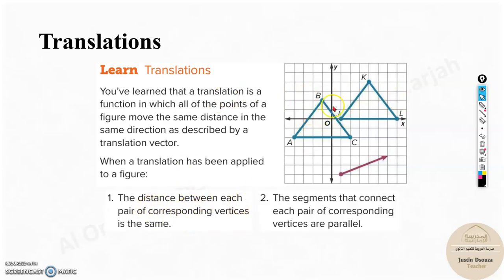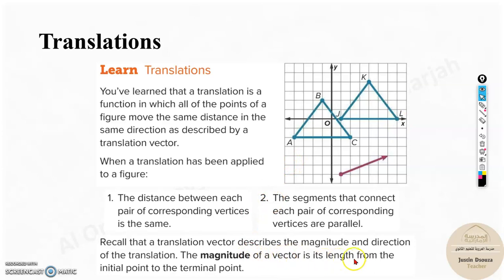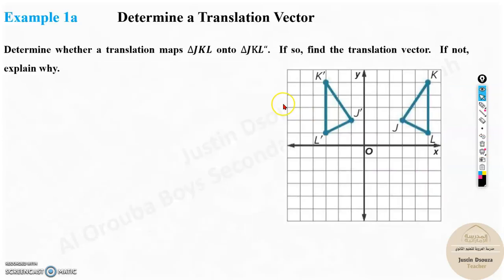Now, the distance between each pair of corresponding vertices is the same. We saw all the translation of all the vertices were the same: 5 in the x-axis and 2 in the y-axis, both in the positive direction. The segments that connect each pair of corresponding vertices are parallel. Now imagine this is a segment which connects the vertices over here. They will be parallel. They will never touch each other because they are translated. And the magnitude of the vector is the length from the initial point to the terminal point. Magnitude is basically length from one vertex to the other or from one point to another point. Let us look into the problems now.